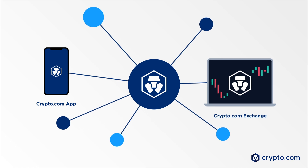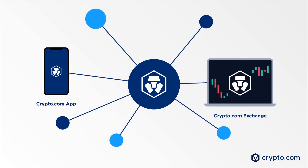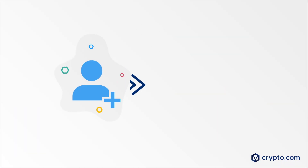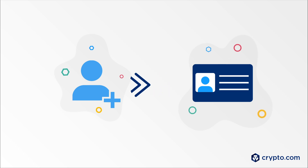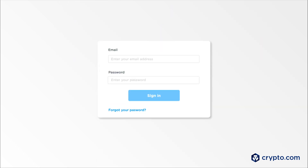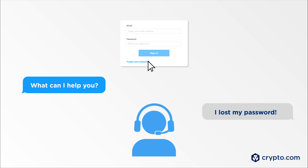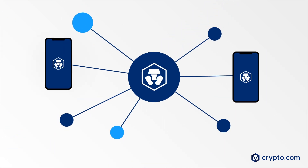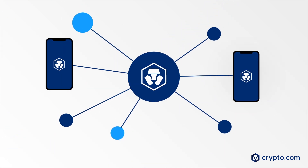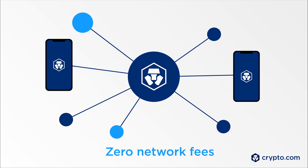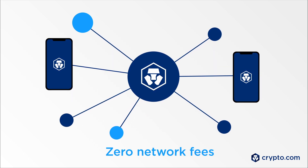The Crypto.com app and Exchange are centralized wallets, which means that Crypto.com acts as the wallet custodian and stores your crypto assets on your behalf. To open an account on Crypto.com, you first need to verify your identity and perform KYC. Should you ever forget your password, Crypto.com's support team is able to help you retrieve it. Transactions made with the Crypto.com app or Exchange wallet are processed almost instantly within the Crypto.com ecosystem with zero network fees.